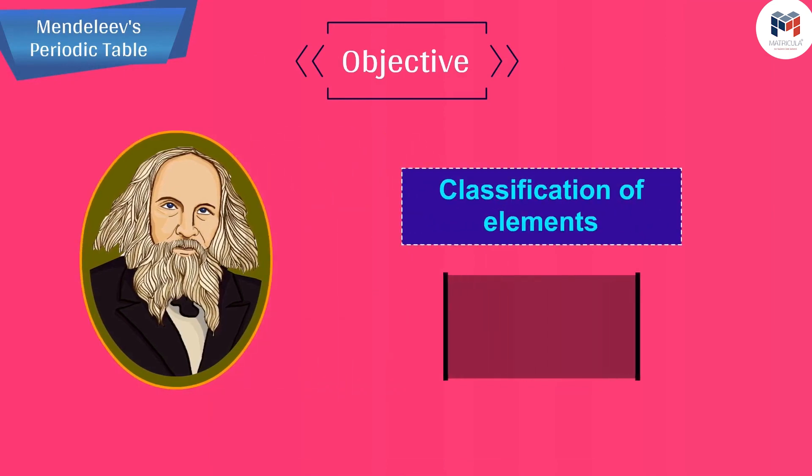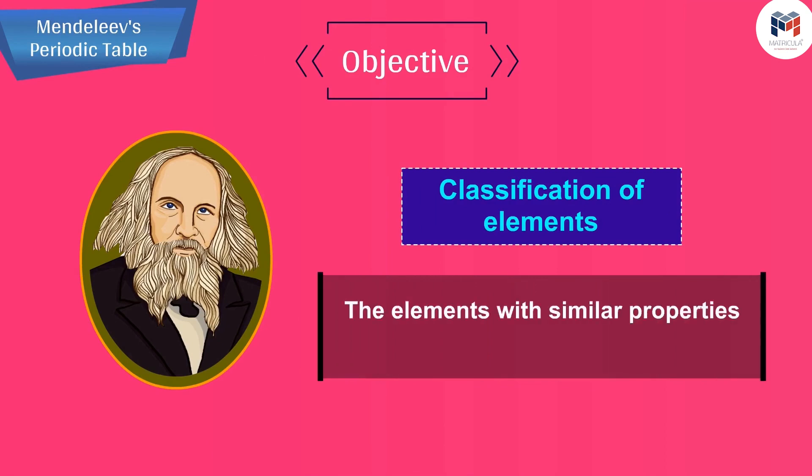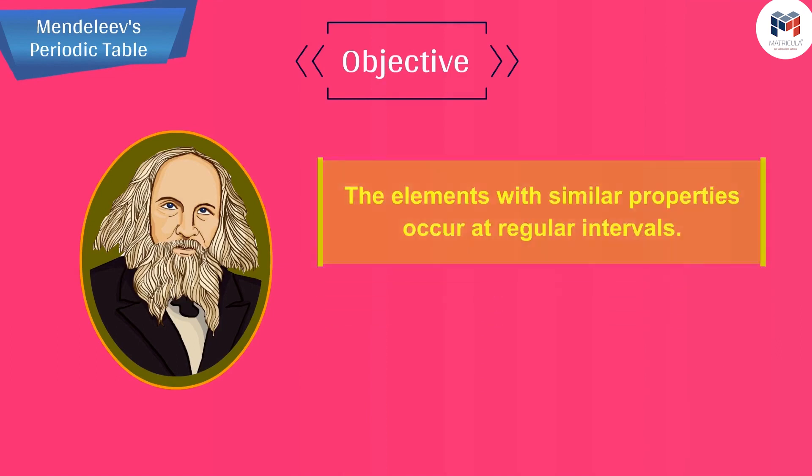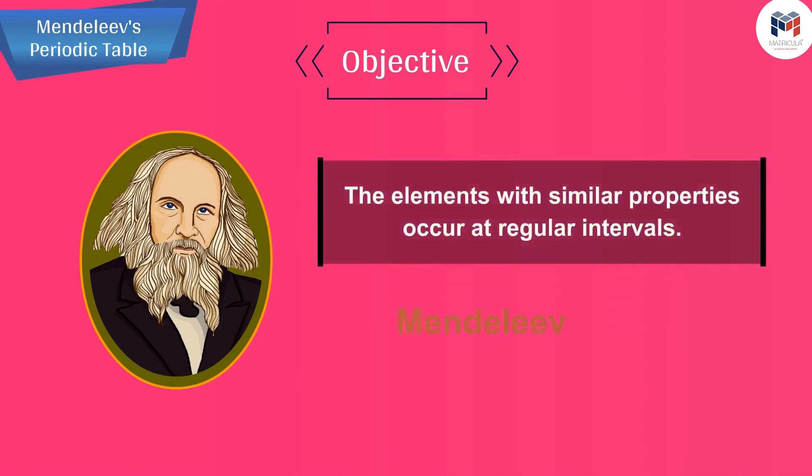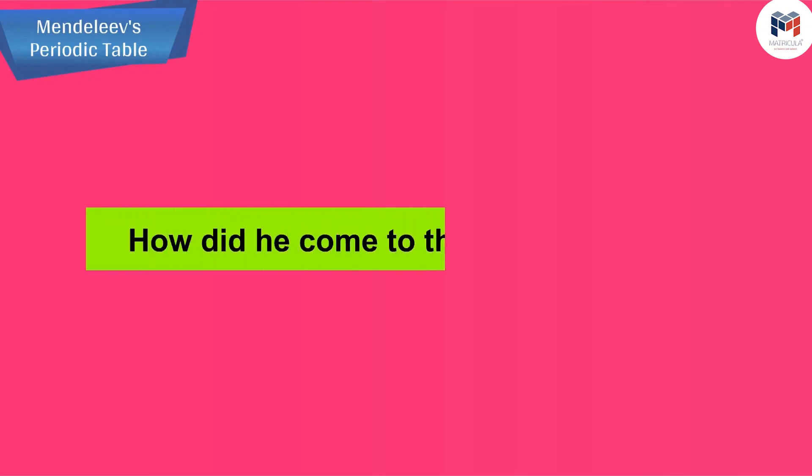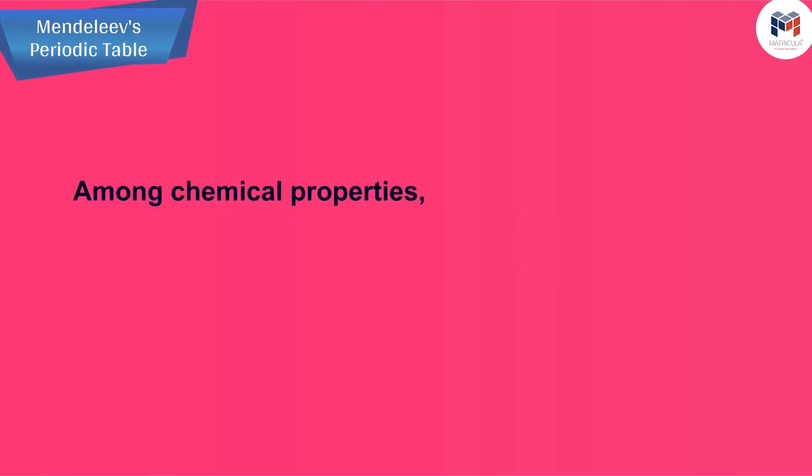He found that the elements with similar properties occur at regular intervals. Based on this observation, Mendeleev gave a periodic law in 1869. How did he come to this periodic law? Among chemical properties, Mendeleev concentrated on the compounds formed by elements with oxygen and hydrogen.